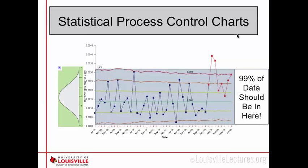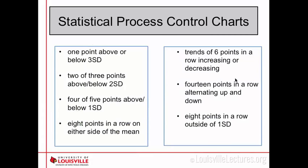There are several rules governing SPC charts. One point above three standard deviations is considered out of the norm. Two of three points above two standard deviations is also out of the norm — if 95% of your data is within two standard deviations and you have two out of three consecutive points outside that, that's a very unlikely occurrence, giving you cause to wonder whether something is going on.